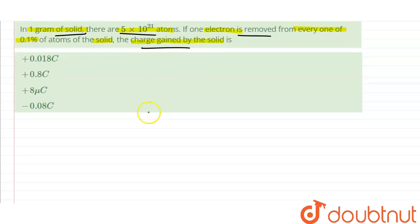So, the number of electrons removed in total is given as n equal to 0.01 divided by 100 into 5 into 10 power 21. So n equal to 5 into 10 power 17.